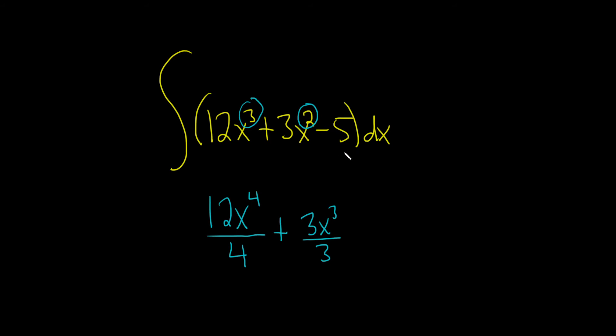And whenever you have a number by itself like this, you just put an x next to it. So minus 5x, and don't forget your plus C.